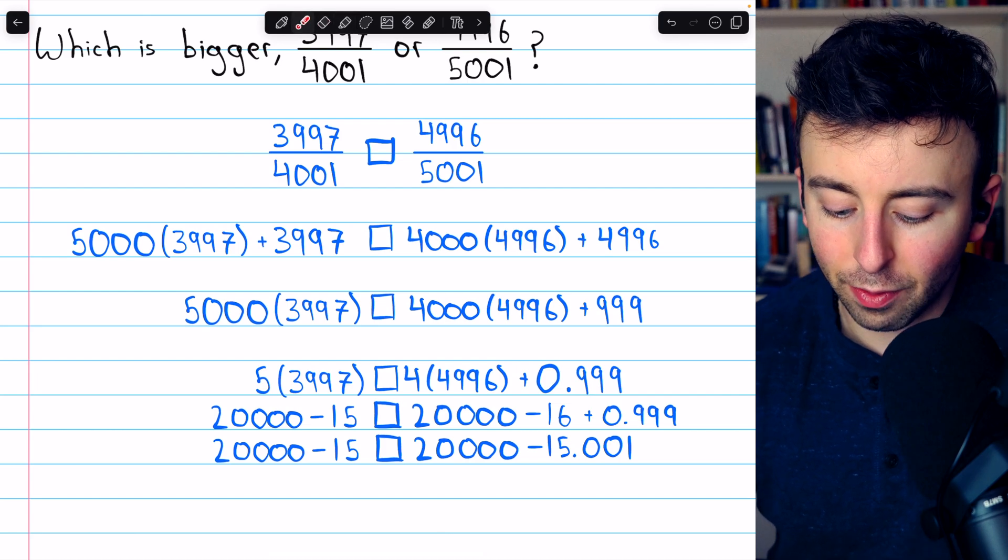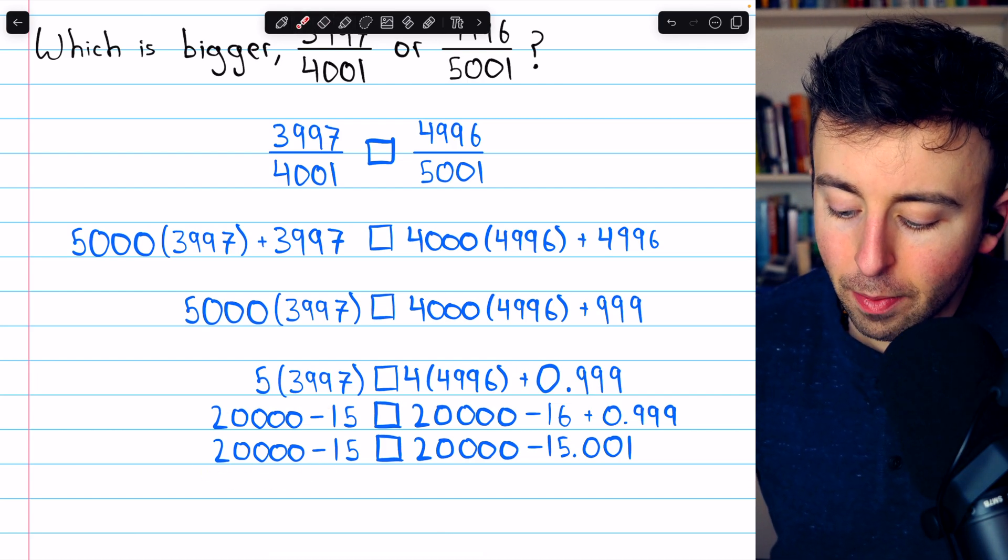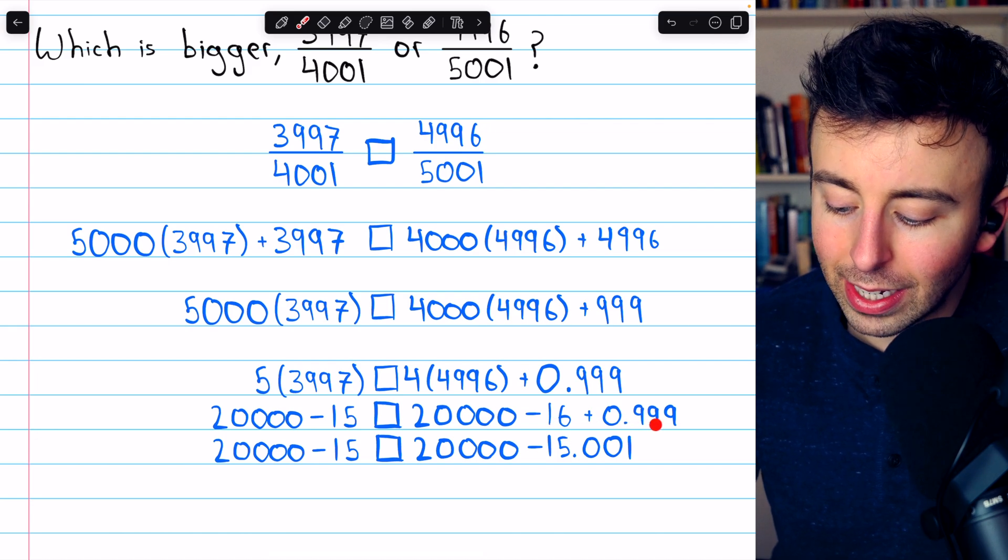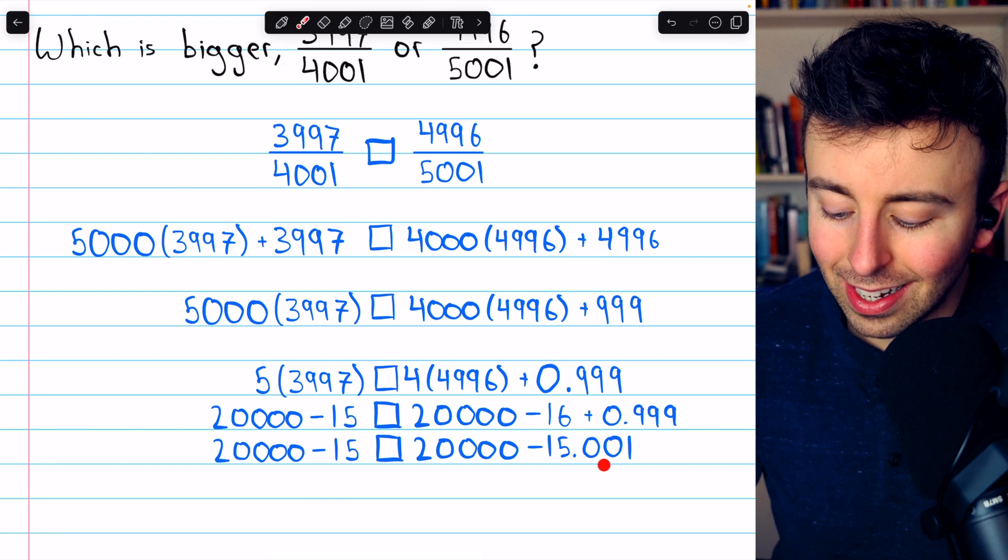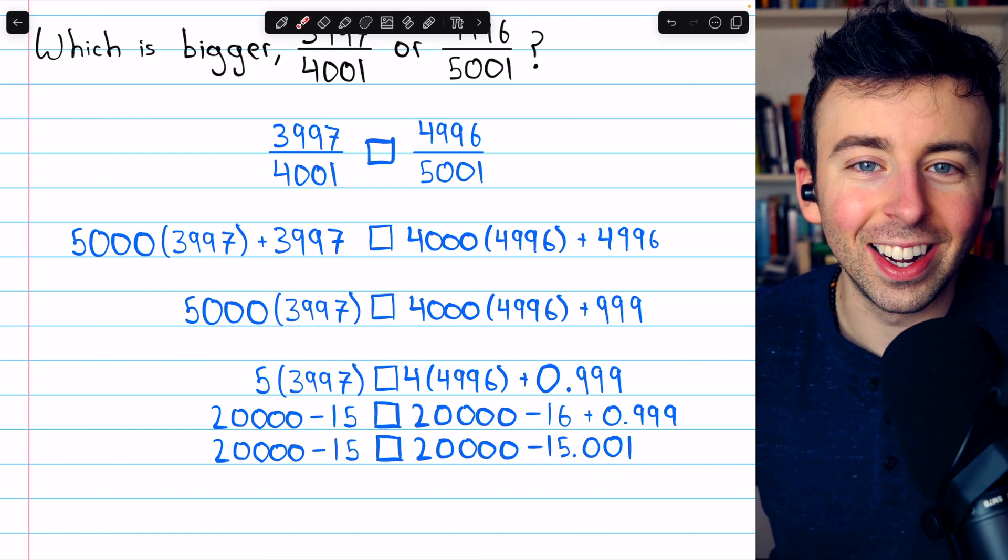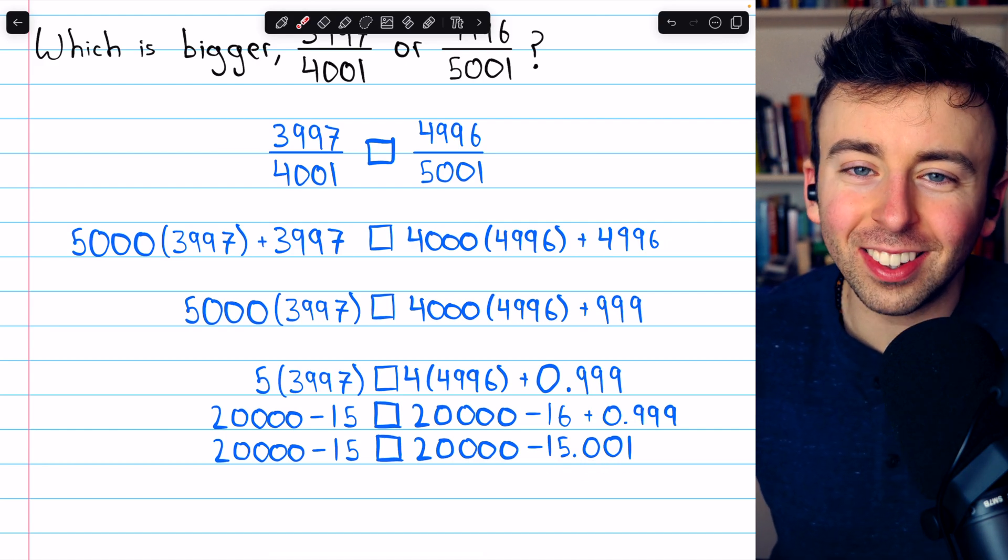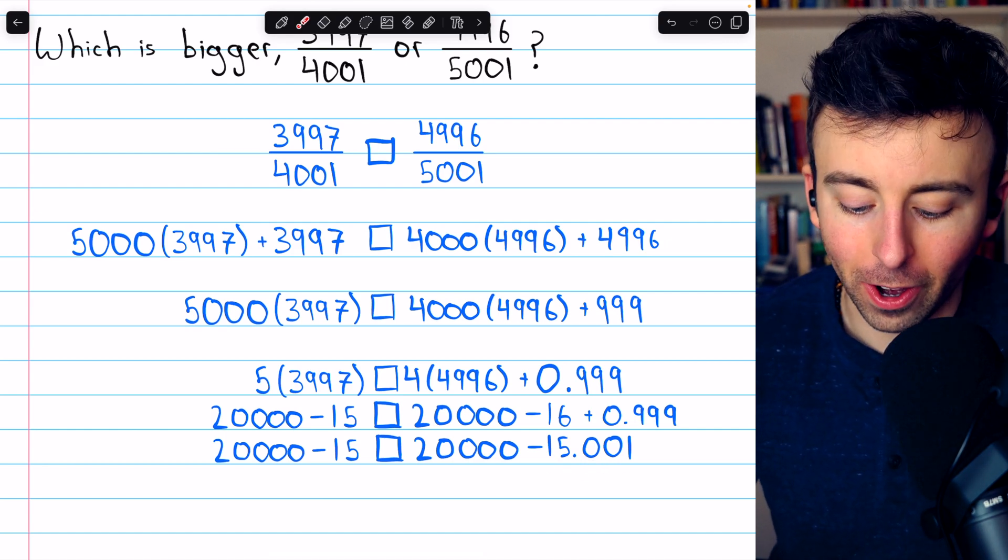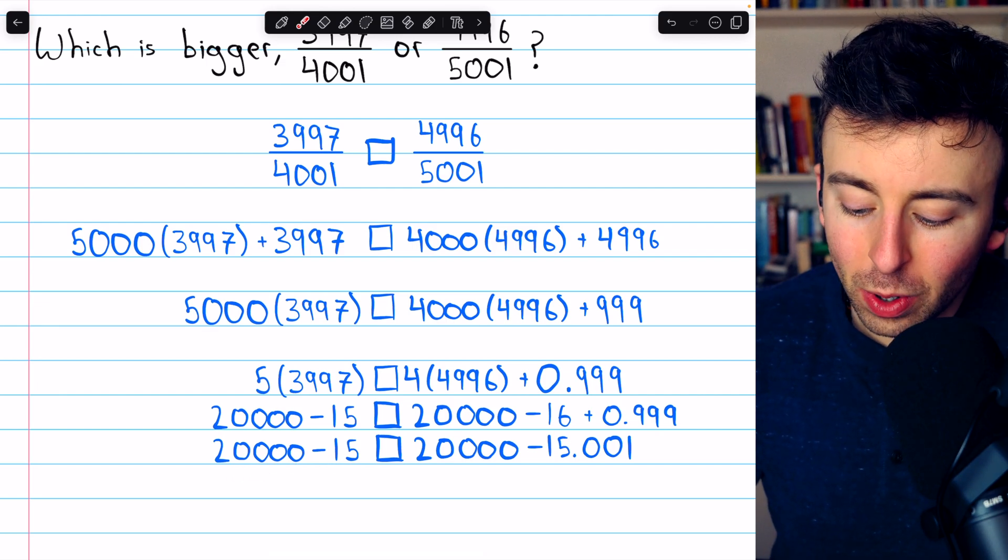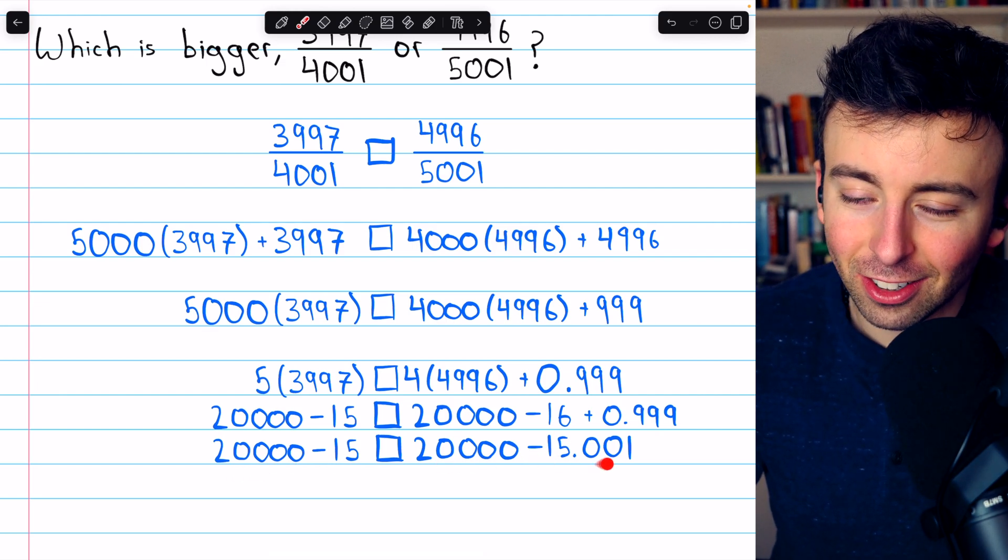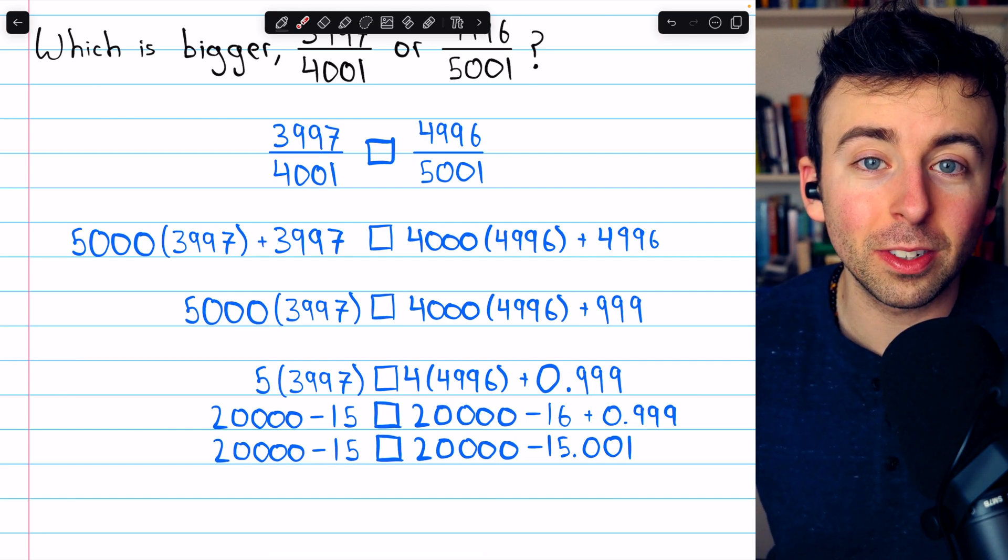And then at the end, what do we have? We have 20,000 minus 15 on the left. And then on the right, minus 16 plus 0.999 is minus 15.001. So there you go. On the right side, we're subtracting just a little bit more than we are on the left. 20,000 minus 15, 20,000 minus 15, and just a little bit more. These numbers were actually really close.